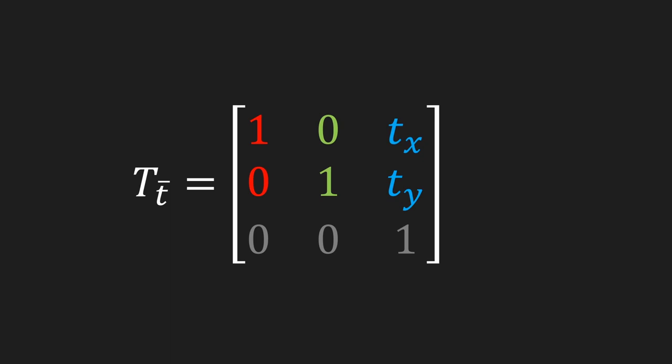You might notice this is not an average matrix. It contains our 2×2 matrix describing the linear transformation, a two-dimensional vector describing the translation, and a strange row of zeros ending with a 1 at the bottom. What we have here is an augmented matrix, where you take a matrix and add a new column to it — in this case describing the translation. More specifically, this is an affine transformation matrix, and it uses homogeneous coordinates to describe the translation.